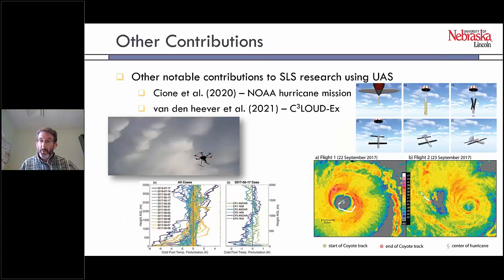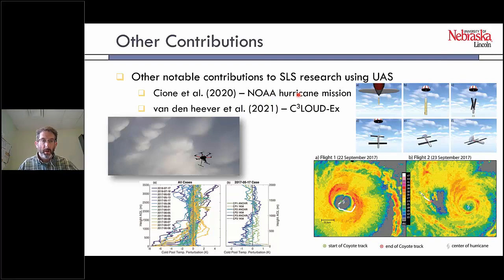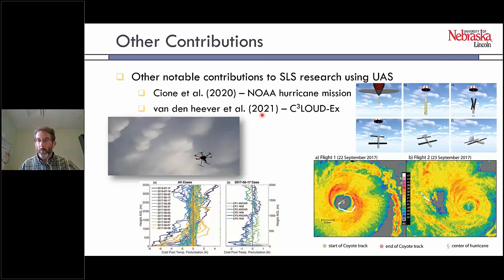We're not the only ones doing severe local storms work with unoccupied aircraft. Joe Sione at NOAA has been flying UAS in hurricanes for a number of years, with a paper out in 2020. Sue Vandenhever at CSU has been using rotary-wing UAS to sample outflows associated with supercells. I wanted to give credit where credit is due — there is other work being done.